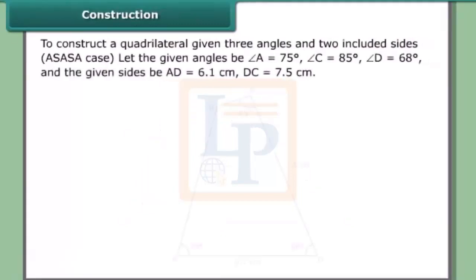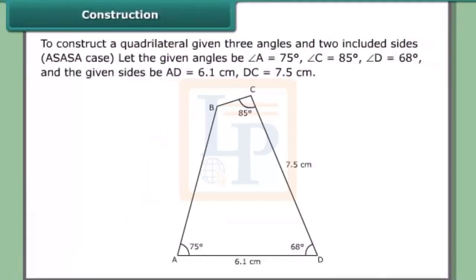Construction. To construct a quadrilateral given three angles and two included sides — the ASASA case. Let the given angles be angle A = 75°, angle C = 85°, angle D = 68°, and the given sides BA + AD = 6.1 cm and DC = 7.5 cm. In this case, we can construct the quadrilateral directly without dividing it into two triangles.